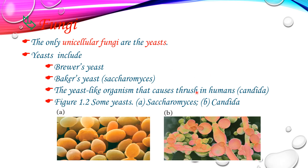Figure 1.2 shows yeast types: Saccharomyces and Candida. Candida is the yeast that causes thrush in humans.